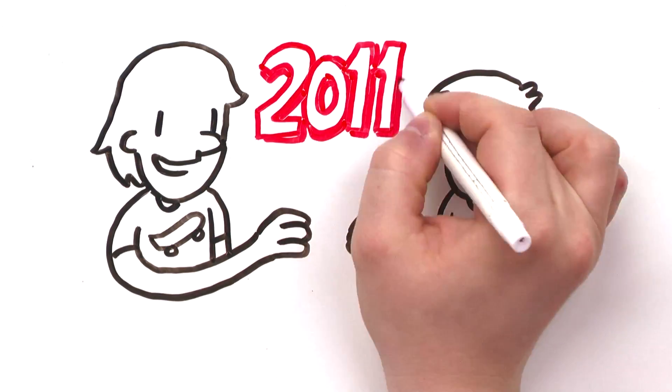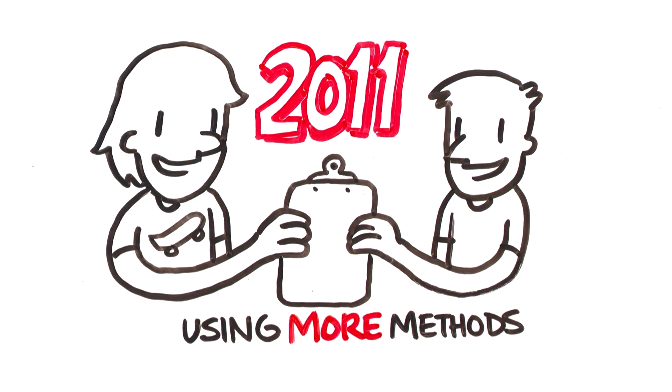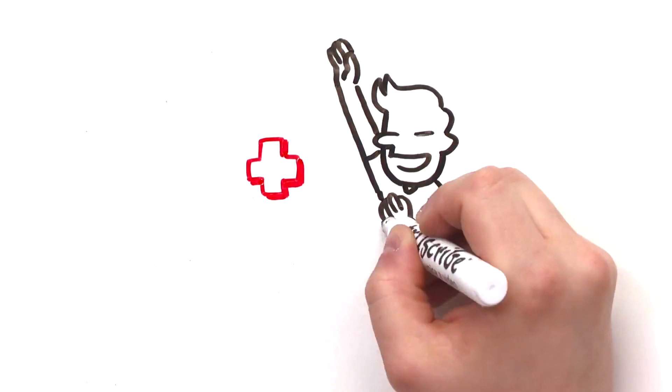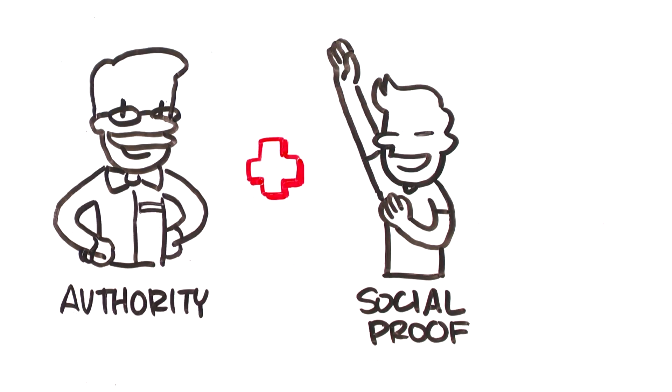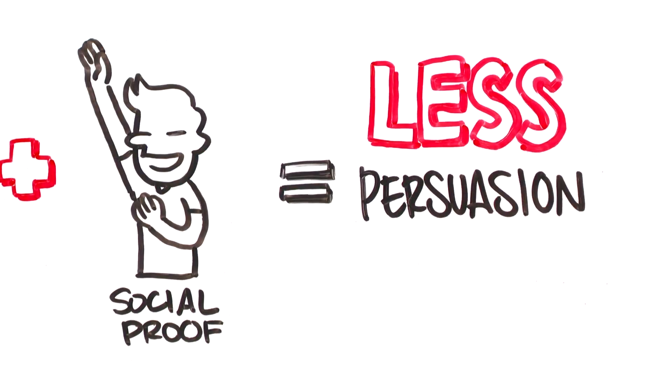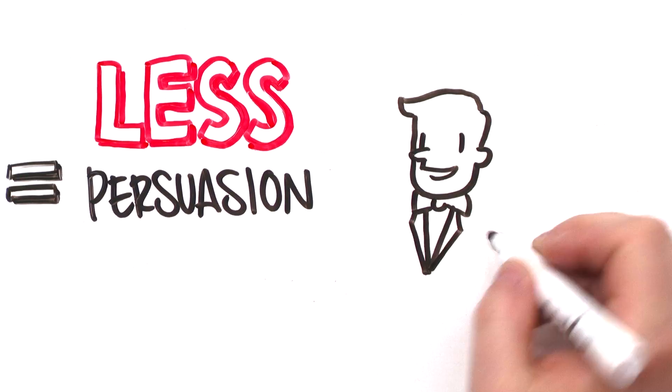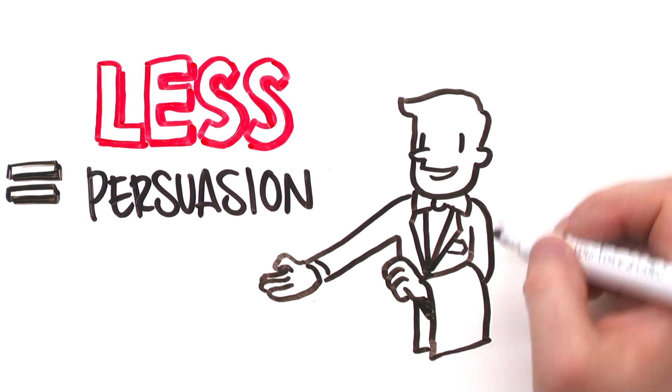Kapteen and Duplinsky in 2011 researched using more methods and found that adding social proof, a weak method in that case, to advice from an authority figure resulted in less persuasion than the authority figure alone.